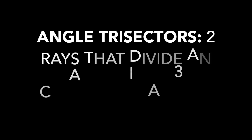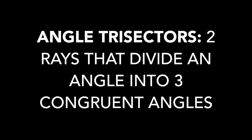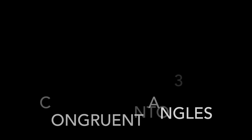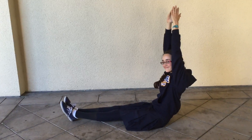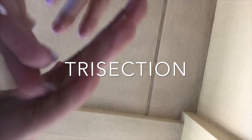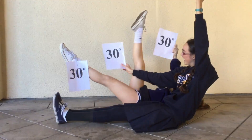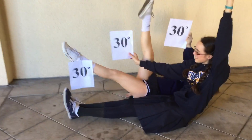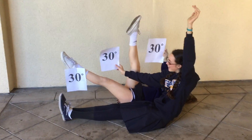The definition of an angle trisector is two rays that divide an angle into three congruent angles. Here is an ordinary right angle. After the 90 degree angle has been trisected, it's divided into three congruent angles, all measuring 30 degrees.